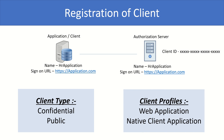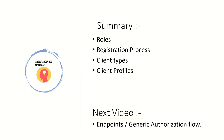Besides client types, there are also client profiles. Your application can be a web-based application or a website, or it can be a native client application installed on the user's machine. In this video, we talked about roles, the registration process, client types, and client profiles like web-based and native client applications. In the next video, I'll talk about endpoints and the generic authorization flow. There are two endpoints — the authorization endpoint and the token endpoint — and a generic authorization flow that gives you the baseline for how OAuth achieves its four different flows defined in the RFC.